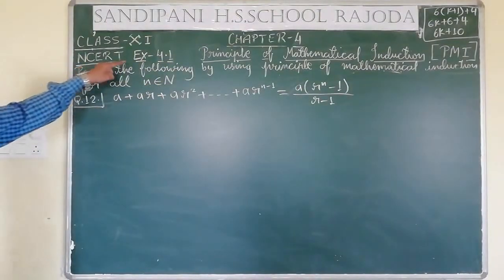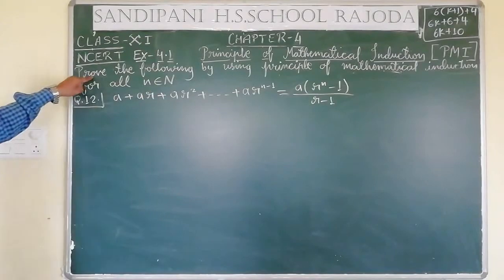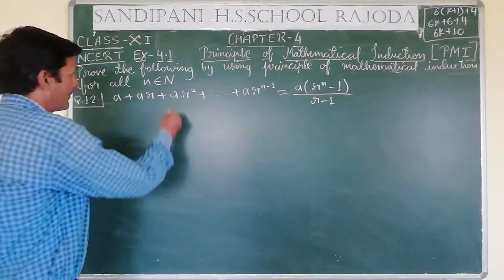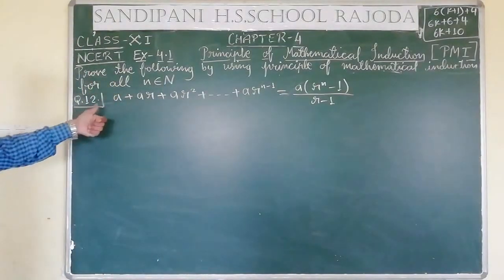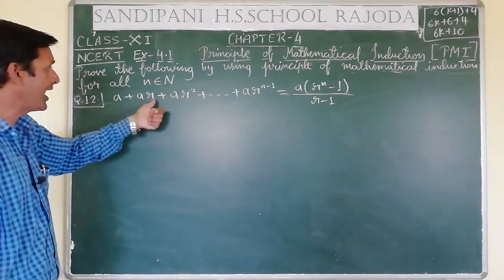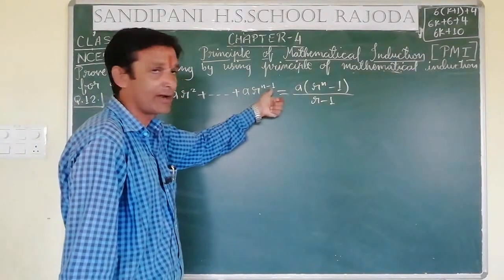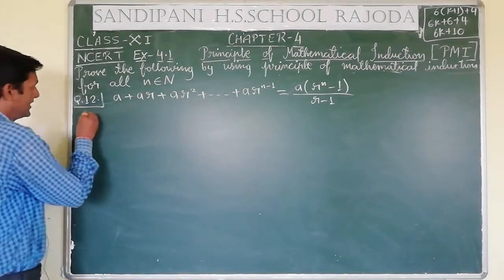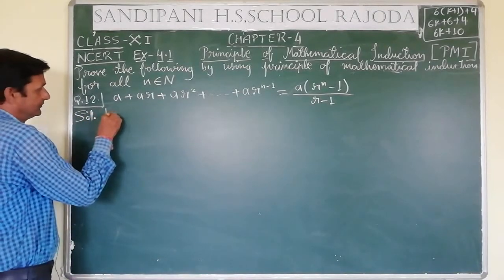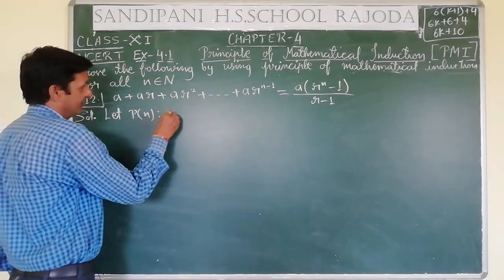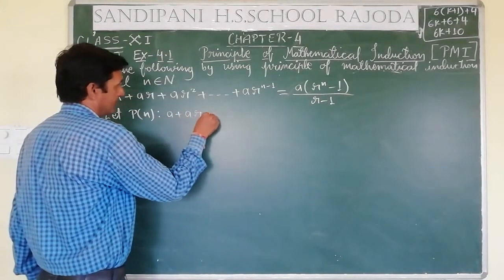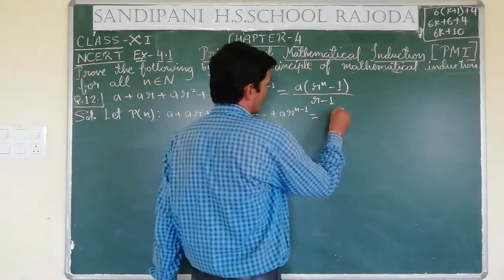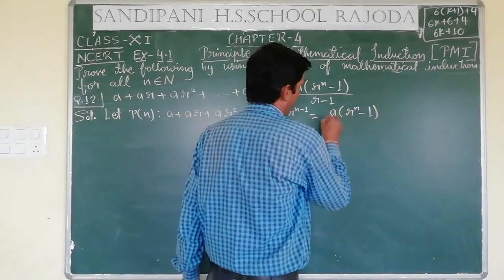We are discussing Exercise 4.1 and the topic is: prove the following by using Principle of Mathematical Induction for all n belonging to capital N, where capital N is the natural numbers. Questions up to eleventh we have done. Question 12 is: a + ar + ar² + ... + ar^(n-1) = a(r^n - 1) / (r - 1).